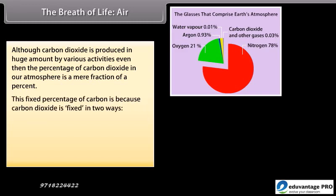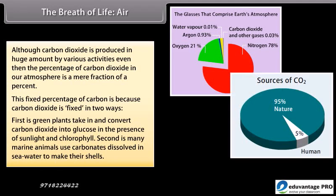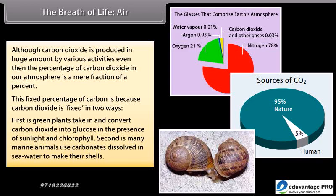This fixed percentage of carbon dioxide is maintained in two ways. First, green plants take in and convert carbon dioxide into glucose in the presence of sunlight and chlorophyll. Second, many marine animals use carbonates dissolved in seawater to make their shells.